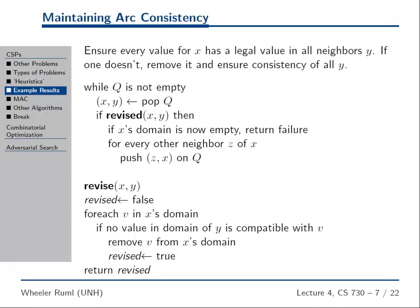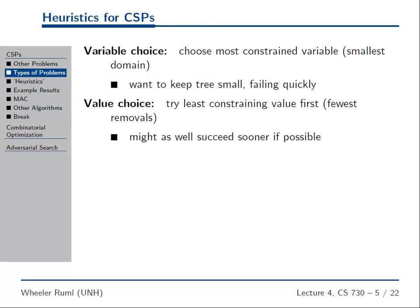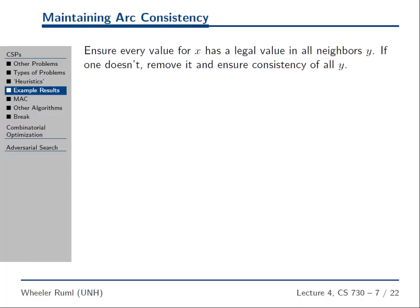There's one last thing about constraint satisfaction problem solving to mention: a more powerful kind of constraint propagation. We talked about forward-checking, which is wonderful. It lets us reduce the domain of other variables, has beneficial effects reducing the branching factor, informing variable selection, and allowing domain wipeout to occur earlier. Forward-checking just looks one step ahead — when you set a variable, it looks at constrained neighbors and reduces their domains. But it doesn't go further, and MAC does that. MAC is a more powerful constraint propagation mechanism.